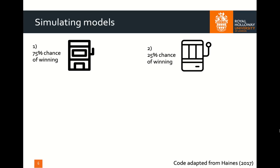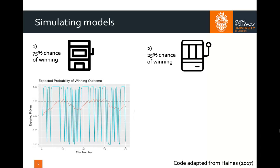I can code this Rescorla-Wagner model to see how participants might behave in my task without actually having to collect a single participant's worth of data. I've got one bandit with a 75% chance of winning and one with a 25% chance of winning, and I'm going to code two very extreme ends of the learning rate parameter: a learning rate of 0.05, which is close to zero, and a learning rate of 0.95, which is close to one, where I'm weighing recent information really highly. In the graph, we can see on the y-axis my expected probability of winning, and on the x-axis the number of trials — how many times I'm sampling that bandit.